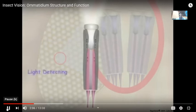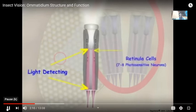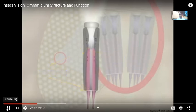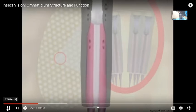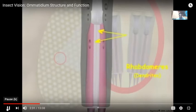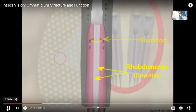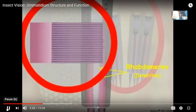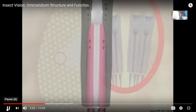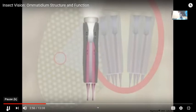The light-detecting apparatus of each ommatidium contains seven to eight light-sensitive photoreceptor cells called retinula cells. Retinula cells are photoreceptor neurons that detect wavelengths of light. The light-sensitive dendritic region of the retinula cell is the rhabdomere. Together, all of the individual rhabdomeres are referred to as the rhabdom. Rhabdomeres consist of parallel microvilli containing light-detecting visual pigment molecules embedded into their plasma membranes. Light entering the cornea and cone of an ommatidium is focused on and detected by visual pigments embedded in the rhabdomere membranes of the retinula cells.